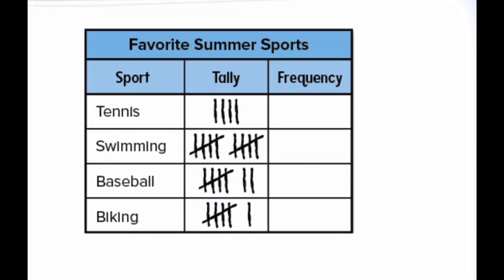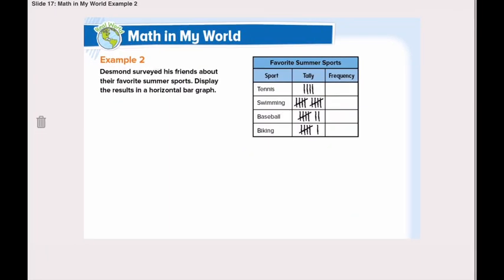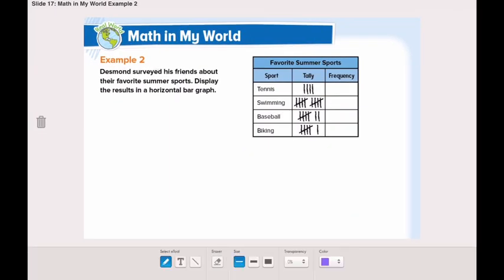We need first to write the frequency. For the favorite summer sports: tennis has 4 friends, swimming has 10, baseball has 7, and biking has 6. Now we've written the frequency of each summer sport.